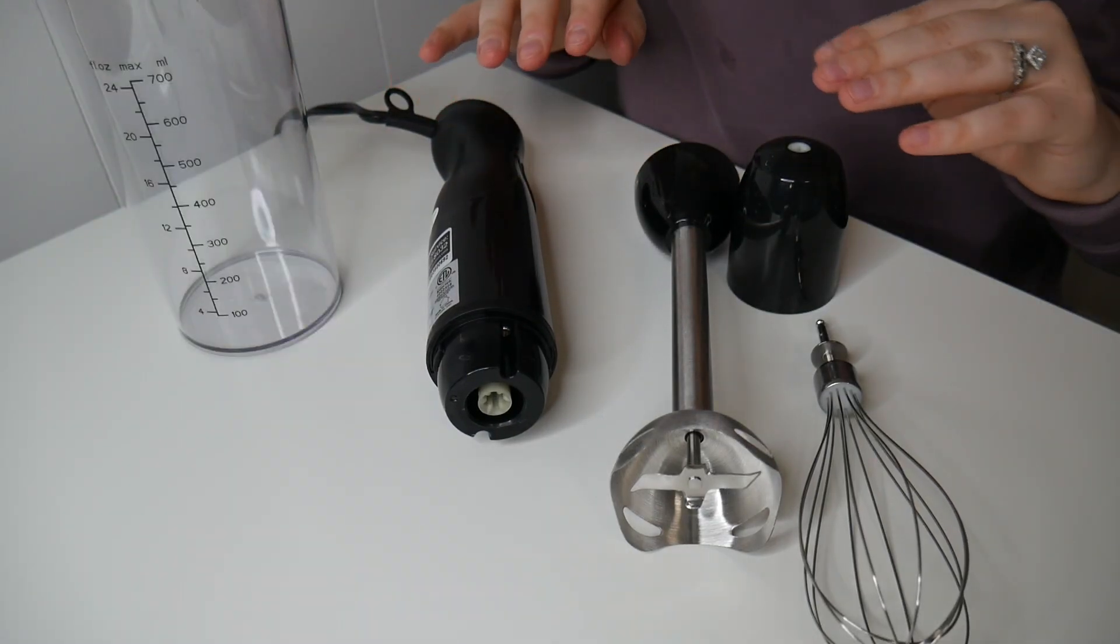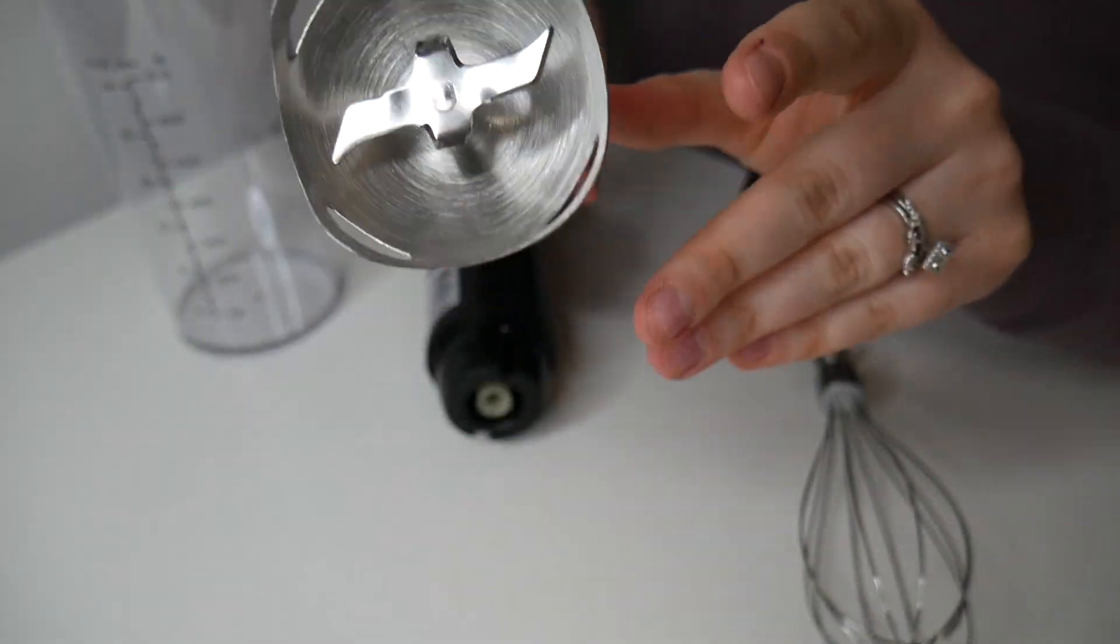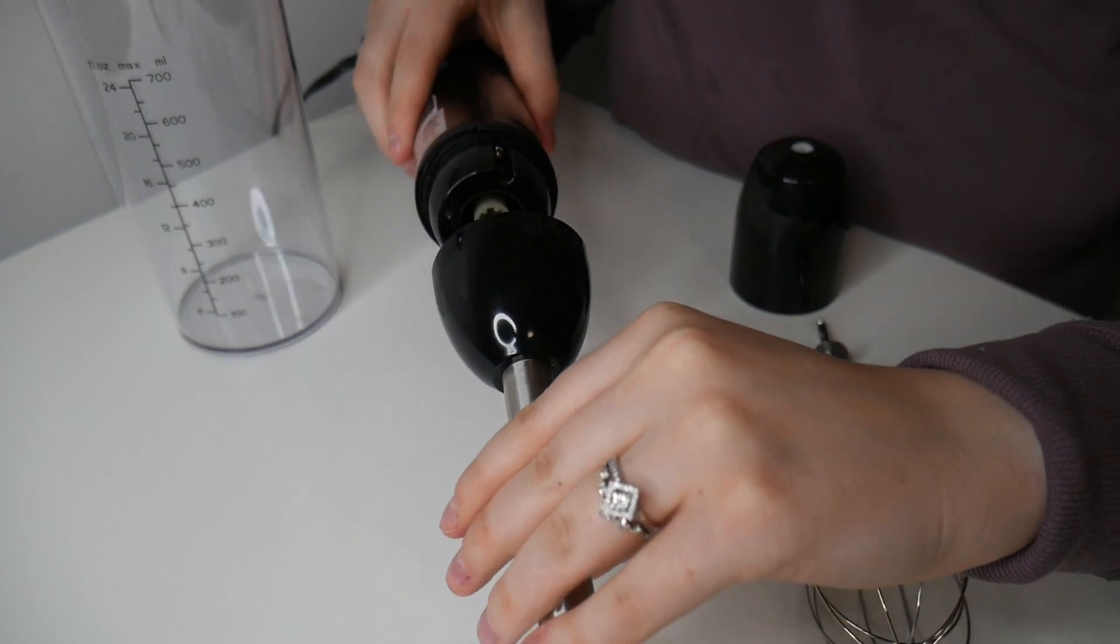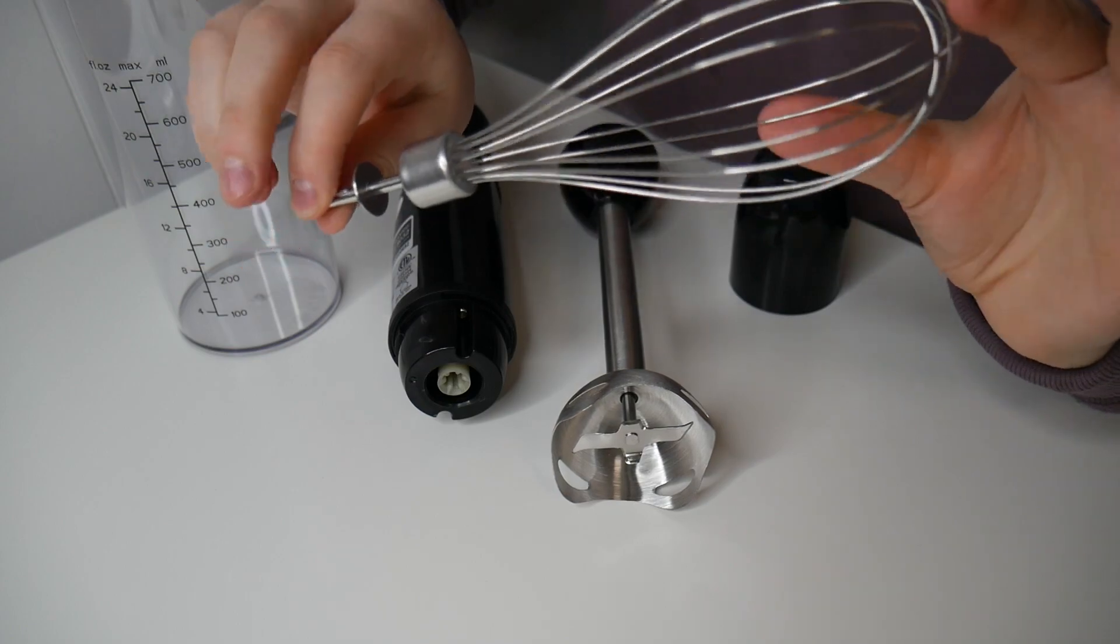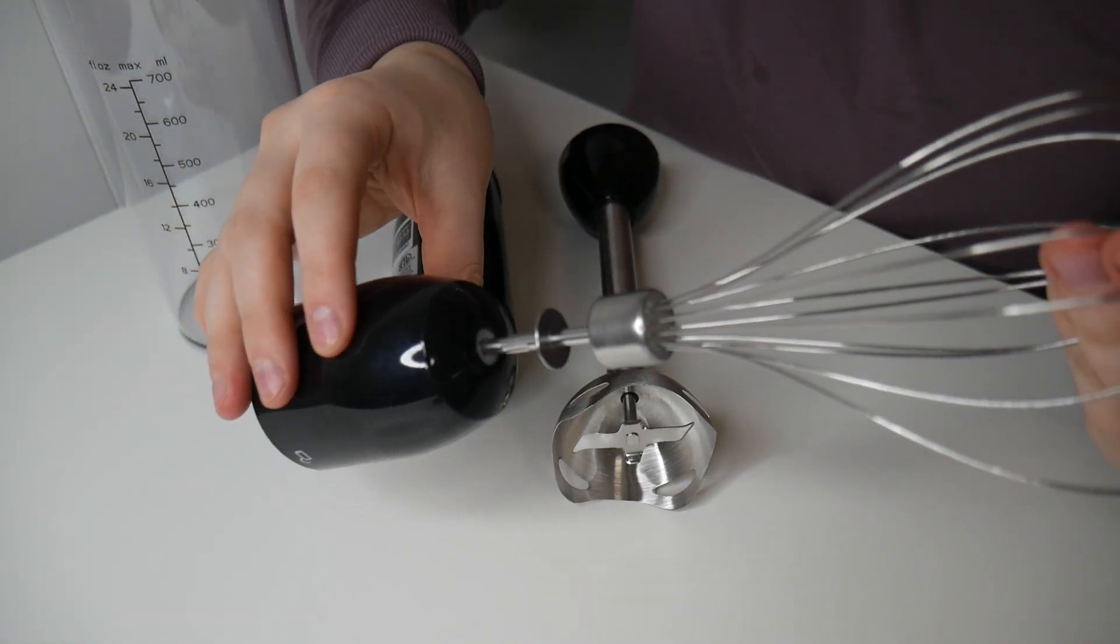For our immersion blender, there are two different styles of heads that we can use. We have our standard immersion blending head which seamlessly fits on top and locks into place with a twist. We also have a whisk-style attachment and the needed head to plug this in.